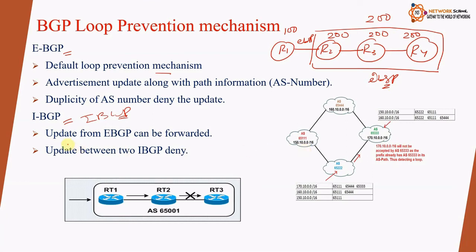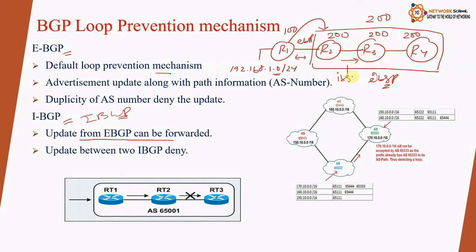Updates from eBGP can be forwarded. Let's say we have the update 192.168.1.0 sent from R1 to R2. From R2's perspective, there is an eBGP relationship with R1. When we look at R2's routing table, we see it received this update from R1 via eBGP. Since it is an eBGP update, R2 can forward it to R3. The relationship between R2 and R3 is iBGP.